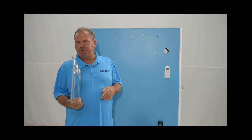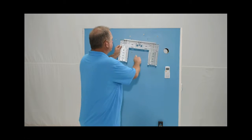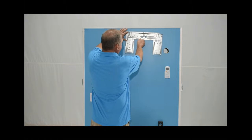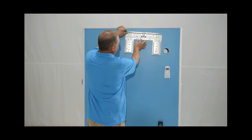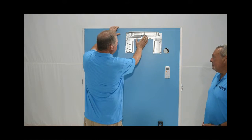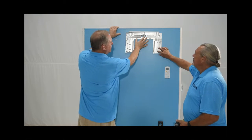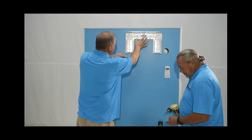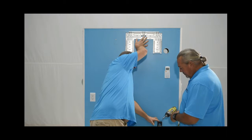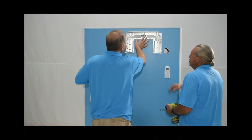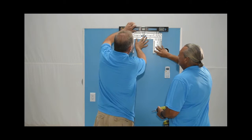What we're going to do first is install the bracket. We want to get that up toward the higher part of the wall if possible. And then what Mark's going to do is just take a level and level that out.